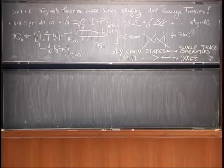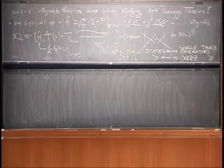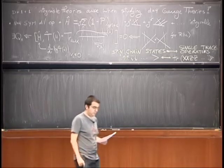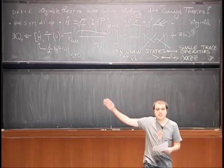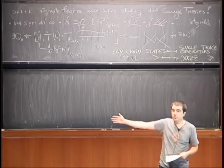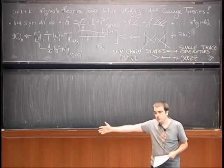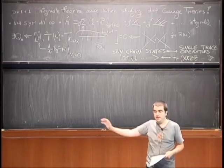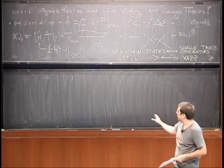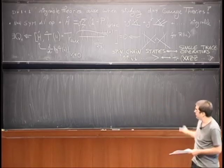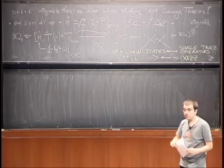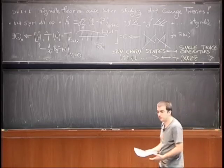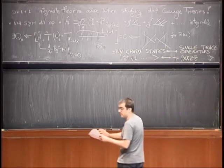Any questions about what we have seen so far? Otherwise, I will move to the other side of the correspondence, move now to the strong coupling, and let's understand where these charges are, where these Q_N's are from the string theory point of view — how to construct these charges starting from the string sigma model.